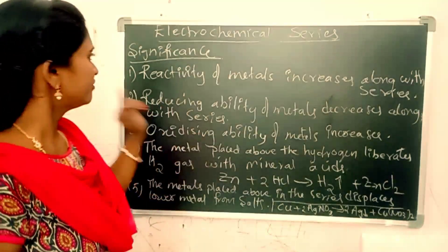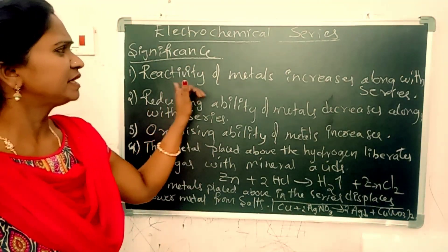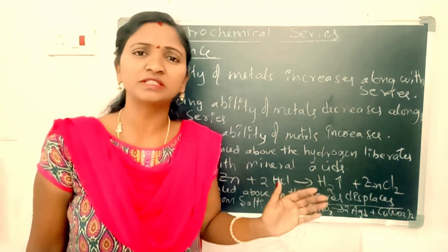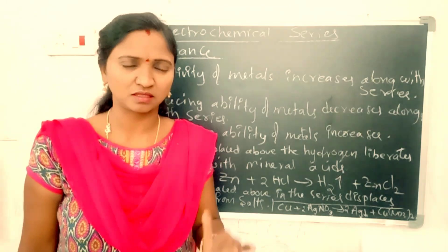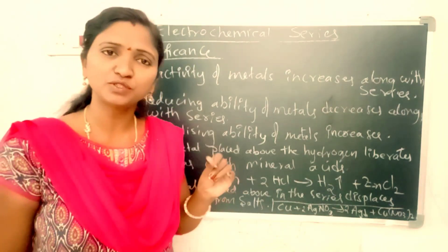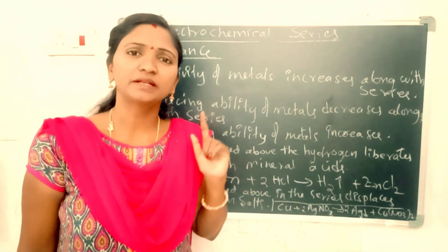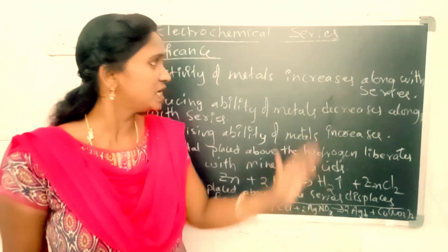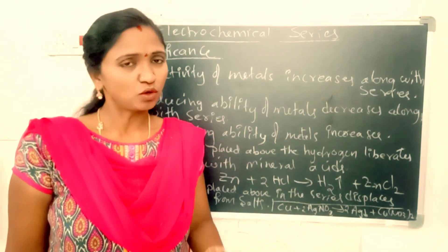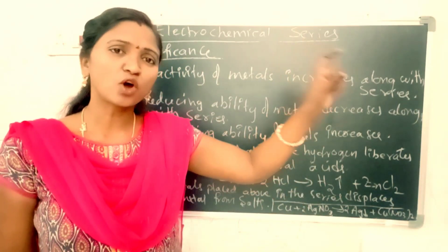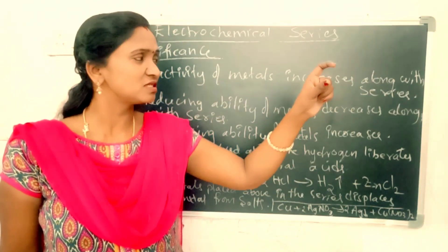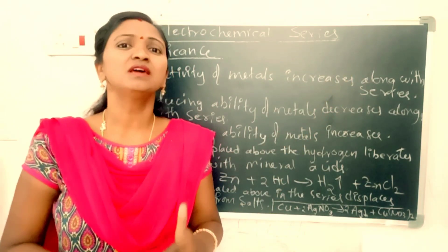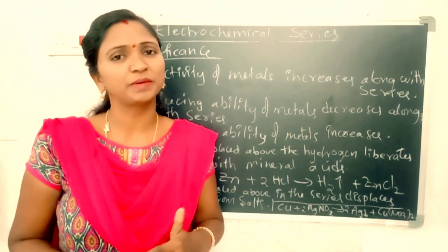First significance: reactivity of metals increases along the series. From top to bottom, the reactivity of the metals increases. So the top metal is less reactive and the bottom metal is more reactive.